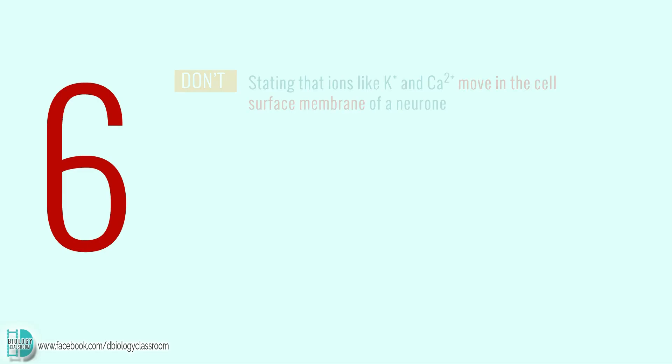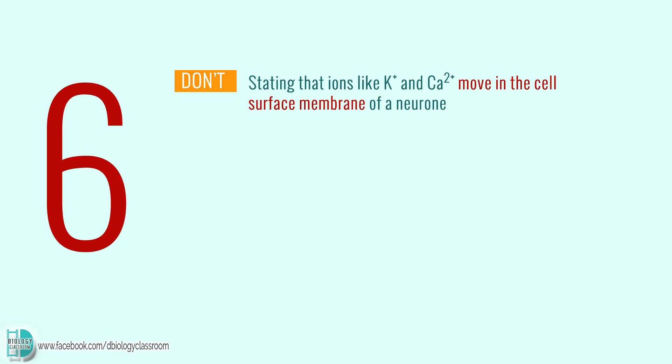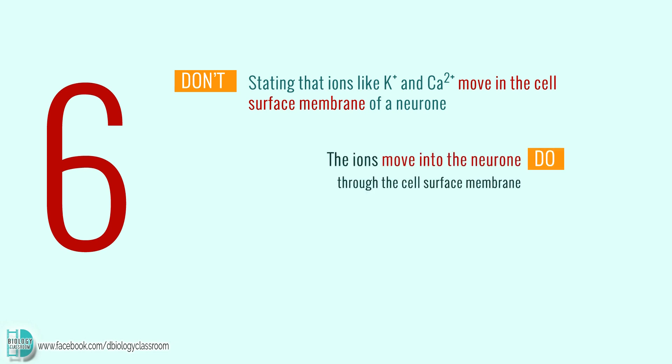Number 6: Stating that ions like potassium ions and calcium ions move in the cell surface membrane of a neuron. The correct description is the ions move into the neuron through the cell surface membrane, so that you are not giving the sense that they move into the cell surface membrane itself.